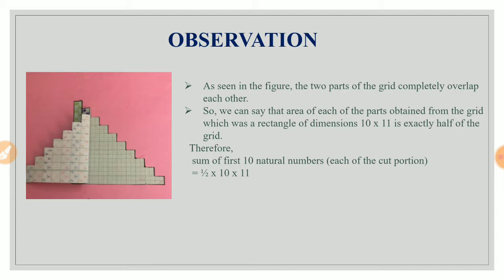So I can generalize this result as the sum of first n natural numbers. See 10 into 10 plus 1 is 11. So that means I get the sum of first n natural number comes out to be half of n into n plus 1.